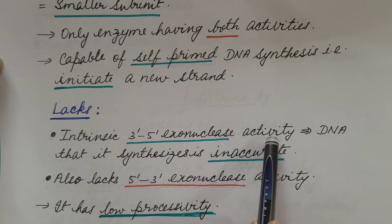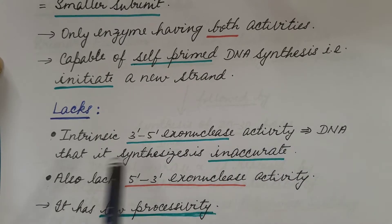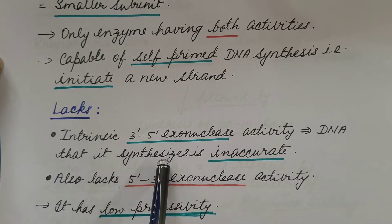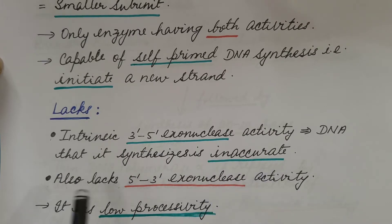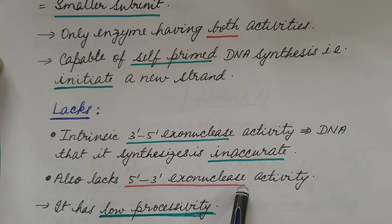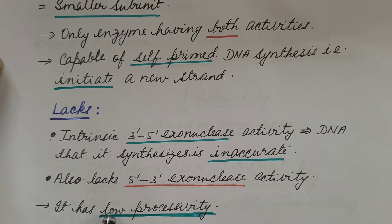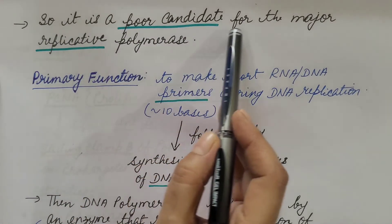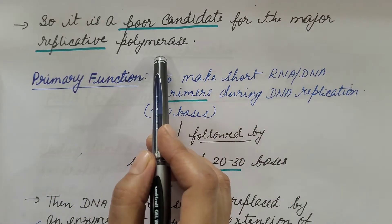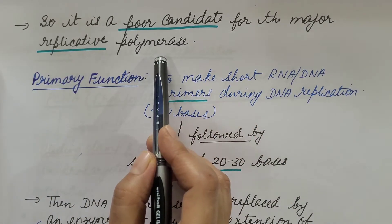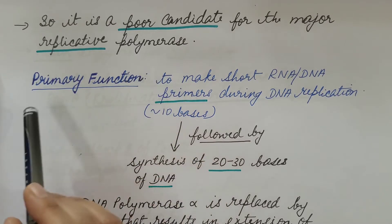But it lacks intrinsic 3'-5' exonuclease activity — that is, the proofreading activity. Hence, the DNA that it synthesizes is inaccurate. It also lacks 5'-3' exonuclease activity. It has low processivity. So it is a poor candidate for the major replicative polymerase — these are not the major replicative polymerases.